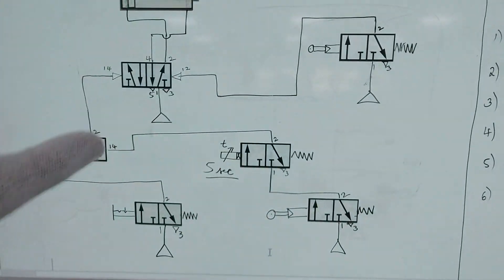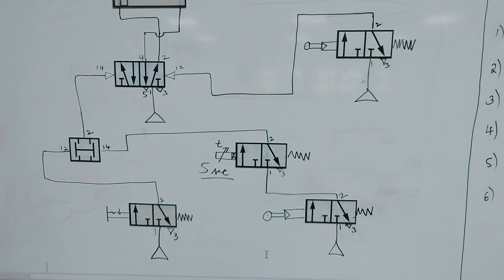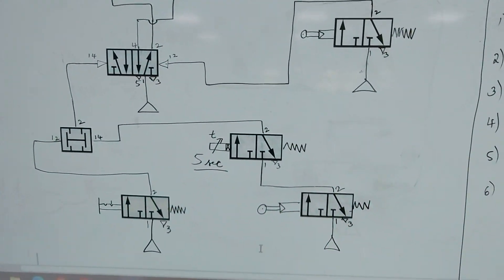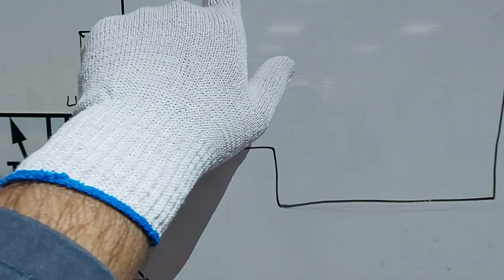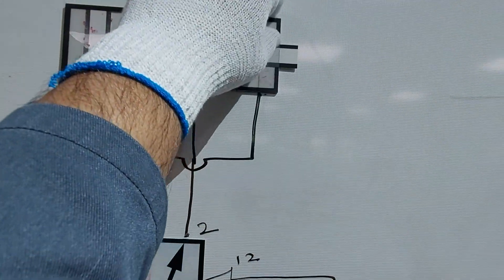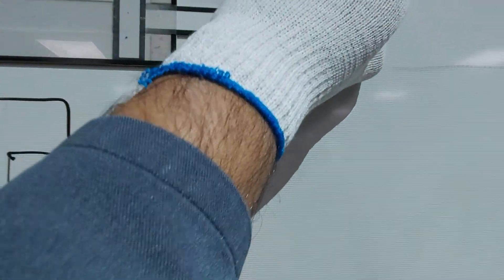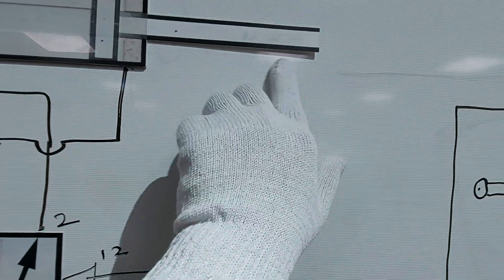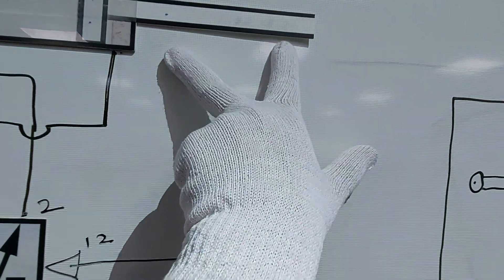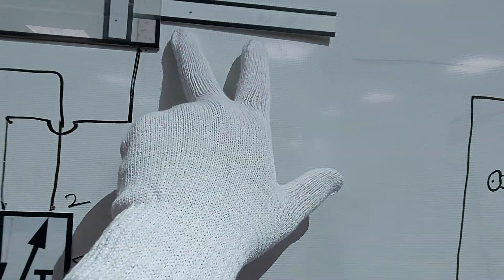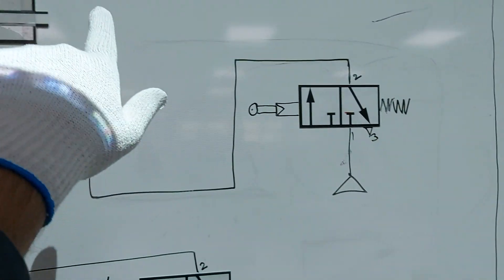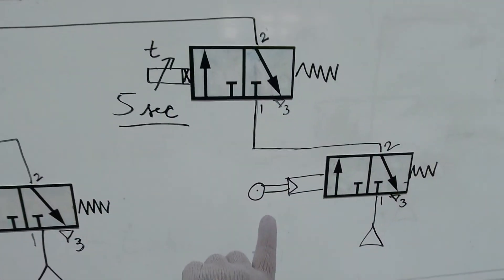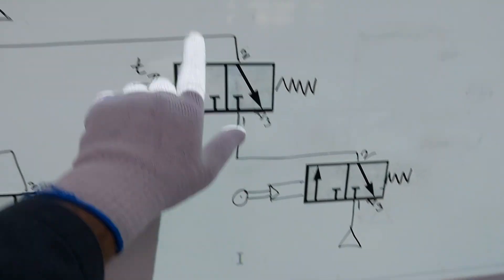If you connect all these components, the circuit will work. But in practice, these rollers will be placed below the cylinder so that the cylinder actuates them as it moves. One roller will be positioned at one end, and the other at the other end.